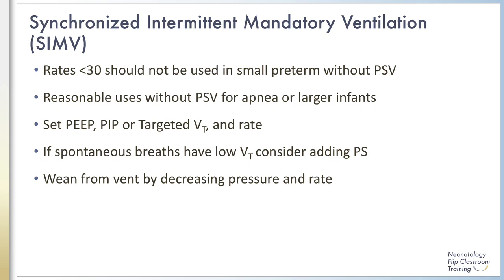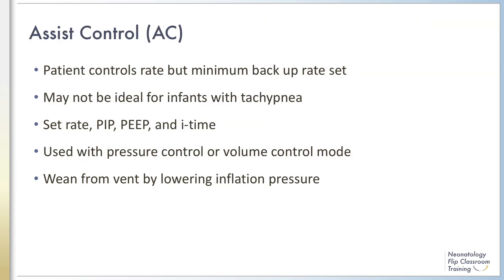PIP needs to be chosen to result in appropriate tidal volume and must be adjusted as lung mechanics change. Use of a volume targeted mode eliminates the need to manually adjust the PIP. If spontaneous breaths have low tidal volume, then pressure support should be added to minimize work of breathing. Weaning from the ventilator is done by decreasing the pressure and the rate; the rate should not be reduced to less than approximately 15 breaths per minute for most infants.